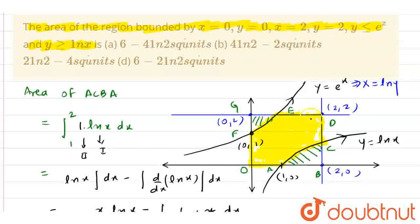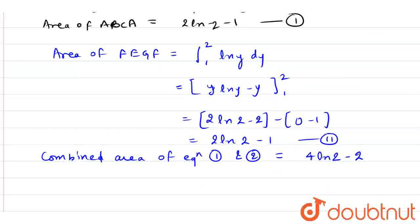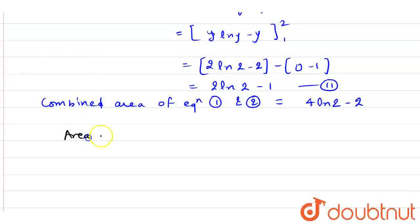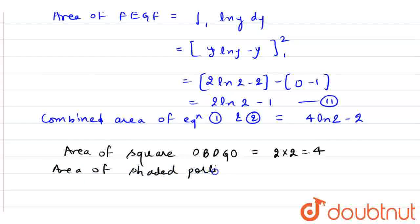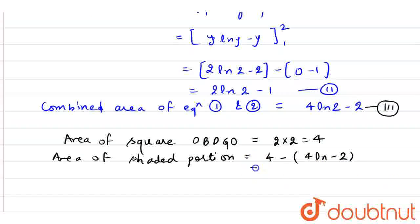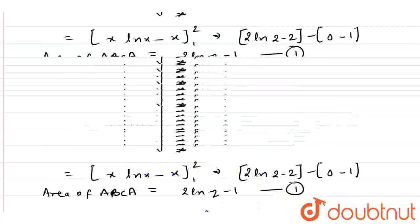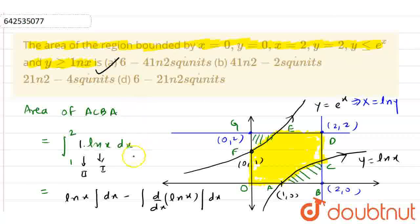As you can see, the region O, B, D, G, O forms a square with side 2, so the area of square OBDGO is 2 times 2, which is 4. The area of the shaded portion is found by subtracting the combined area from the total square area: 4 minus (4·ln 2 minus 2), which gives 6 minus 4·ln 2. This is my final answer. As per the options, option A is the correct option.